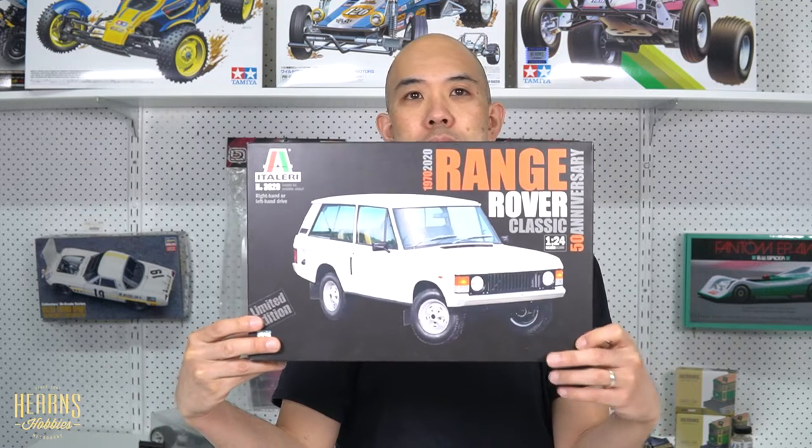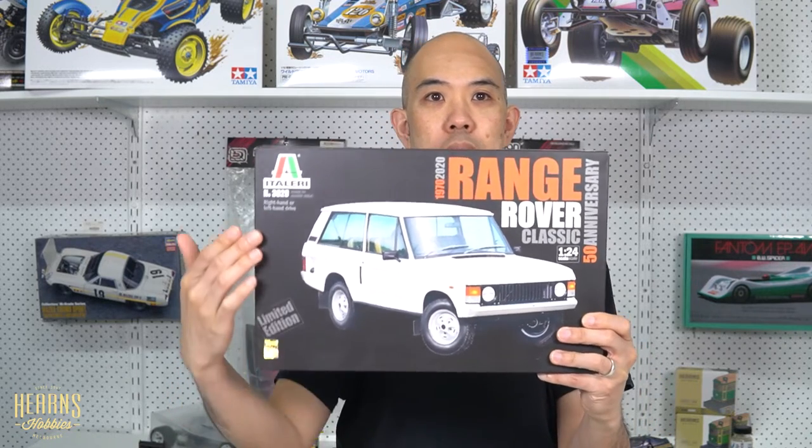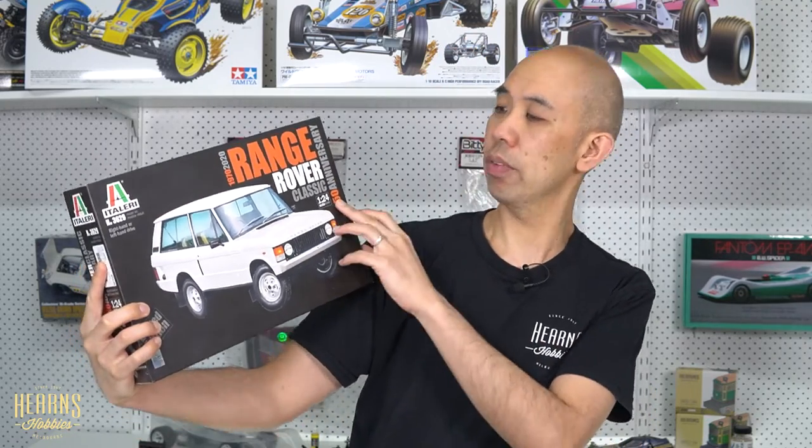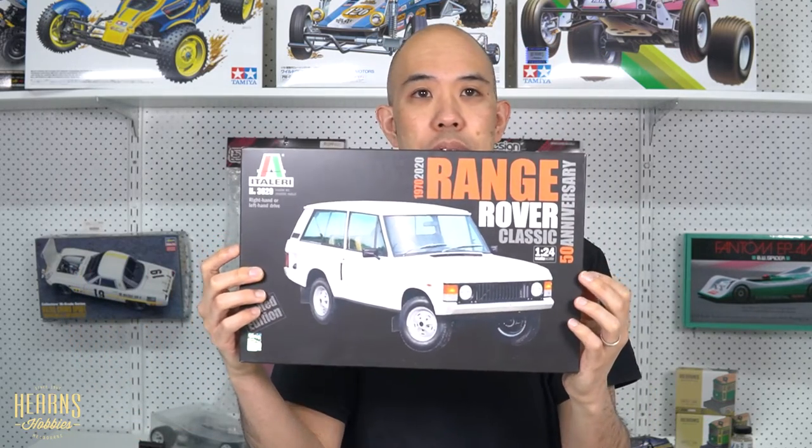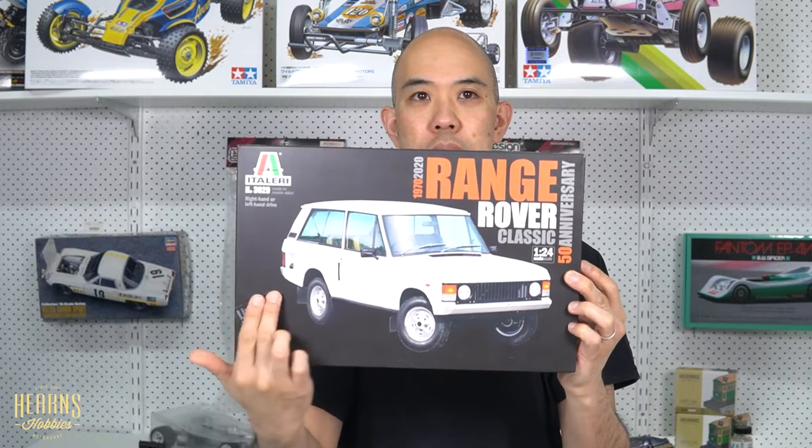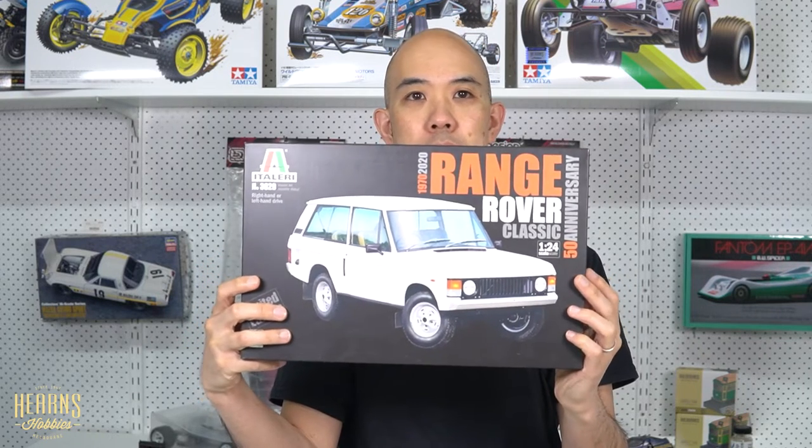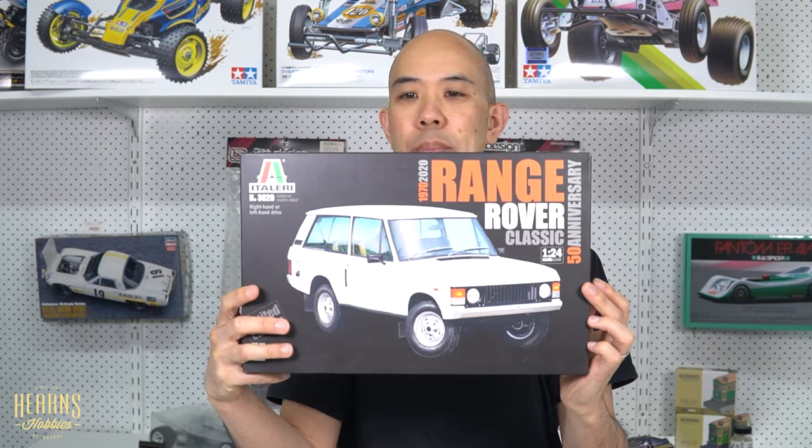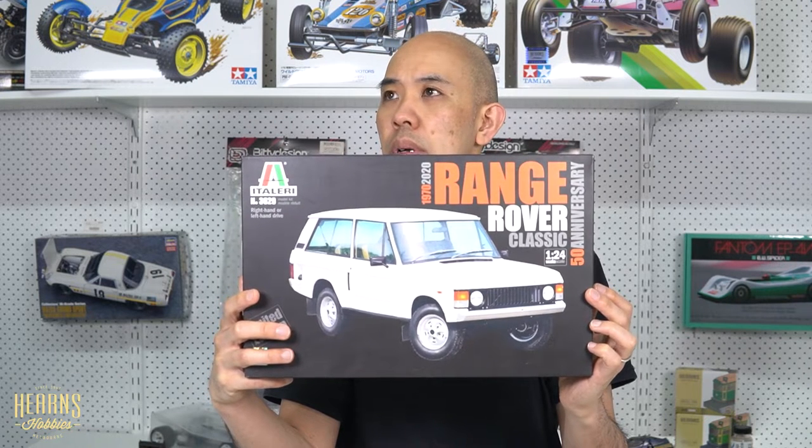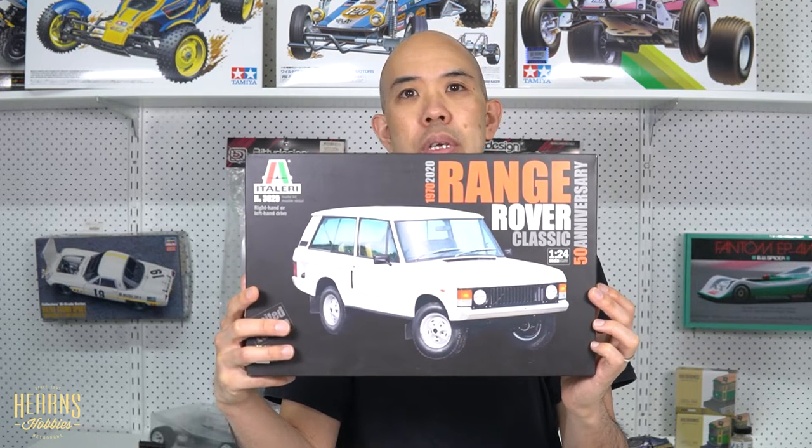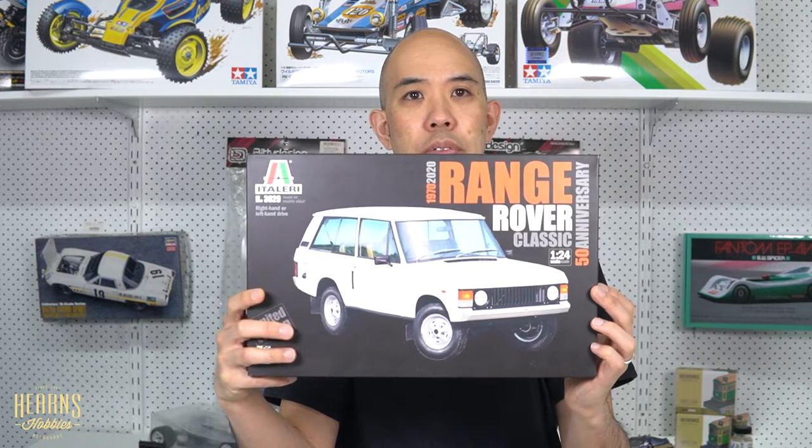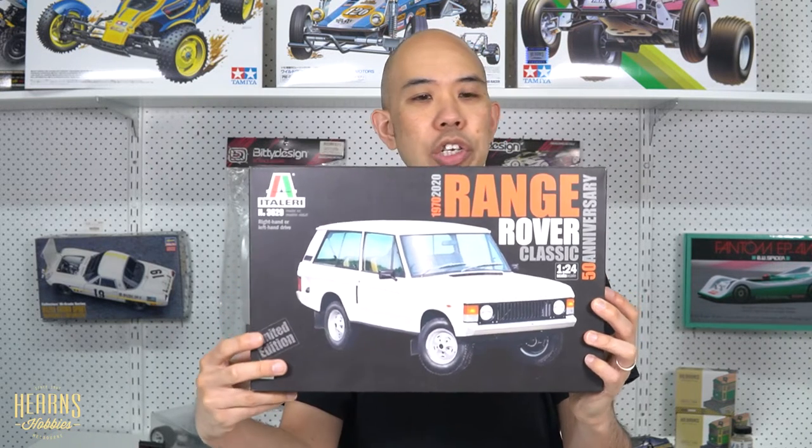So this has been released for the 50th anniversary, because it came out in 1970. This particular Range Rover is a very iconic design. This is the very first car released under the Range Rover branding, built all the way to 96 in some kind of guise, but the overall shape never really changed.